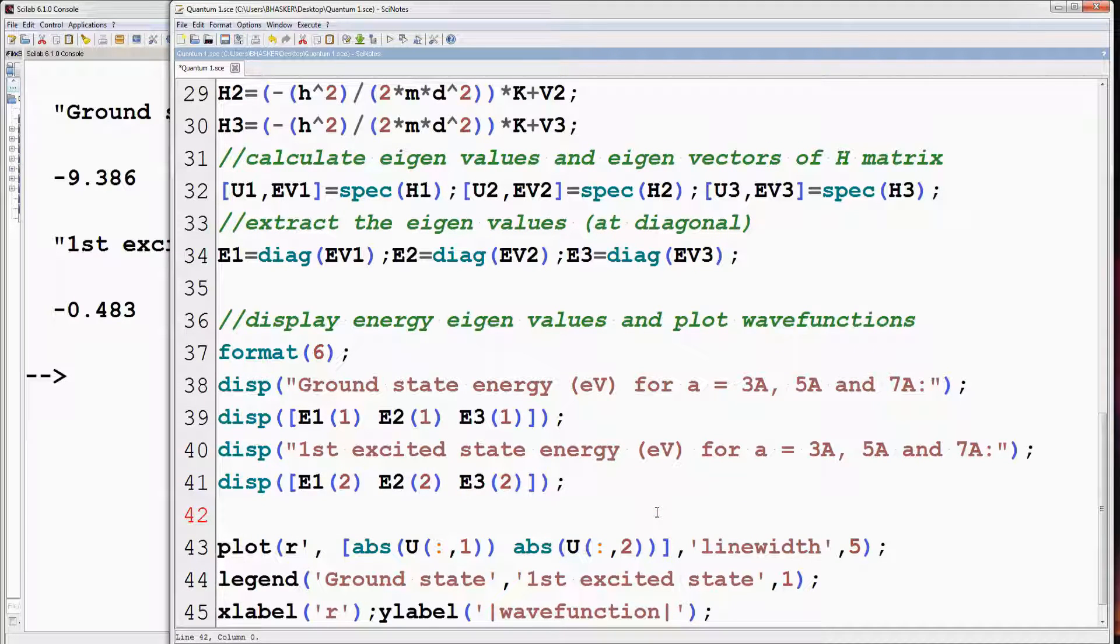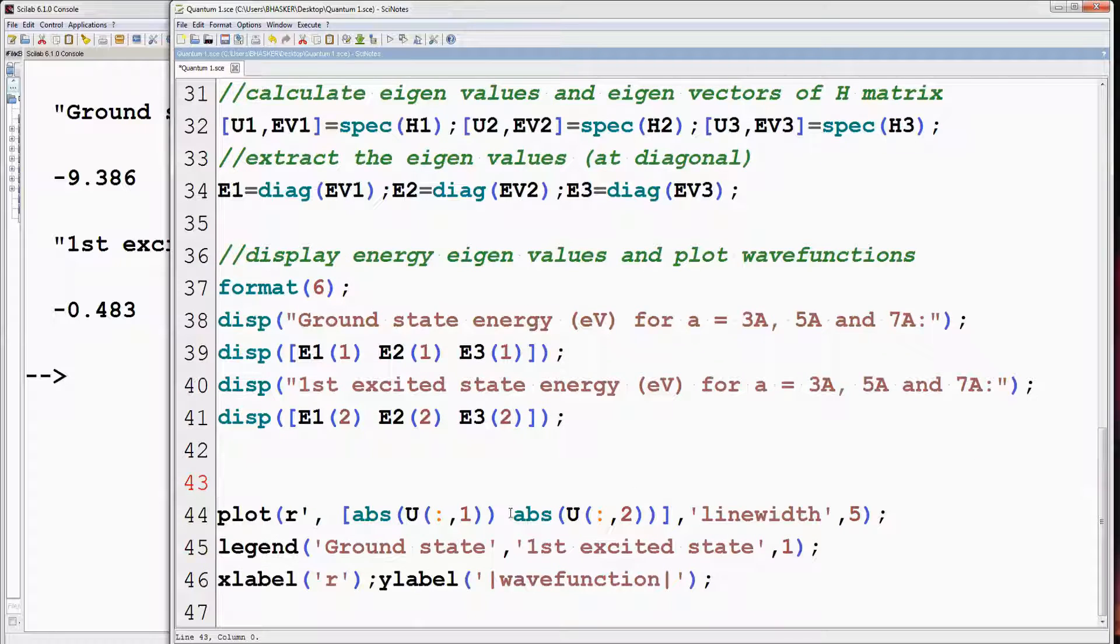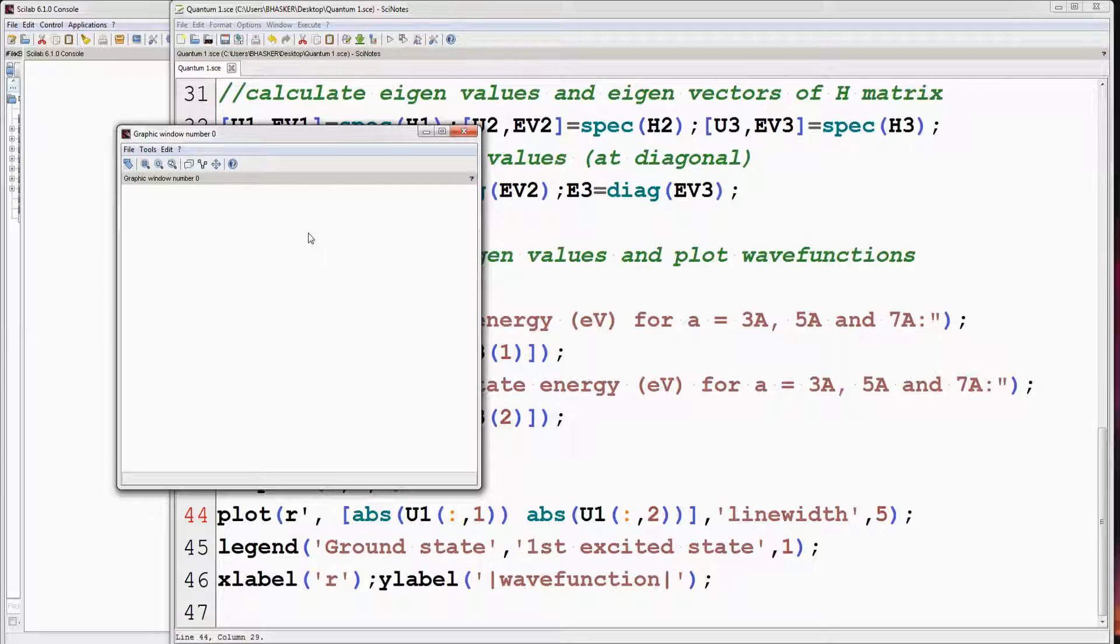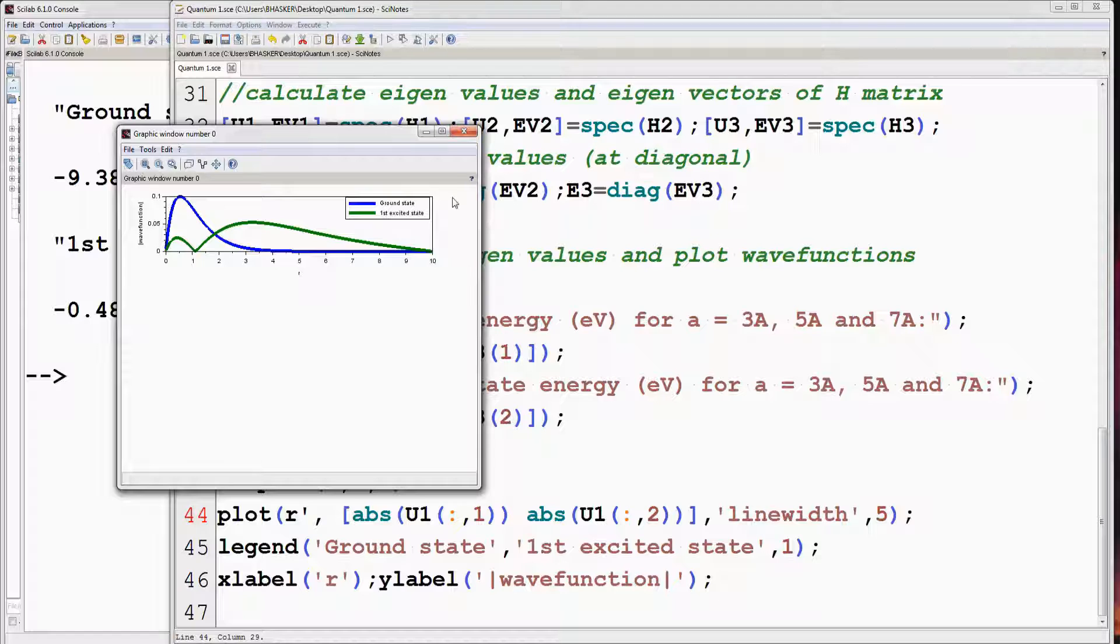We can use the function subplot and divide the graphical window vertically and horizontally. Here we are dividing graphical window into three parts vertically, just like one column and three rows. So it's subplot 3, 1, 1. 3 represents number of vertical divisions, first 1 represents number of horizontal divisions, and second 1 represents the position of the plot on the graphical window. Change u2 to u1 in plot function. Run the program. So first set of curves for a equal to 3 is plotted.